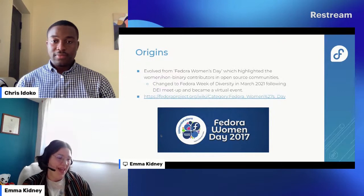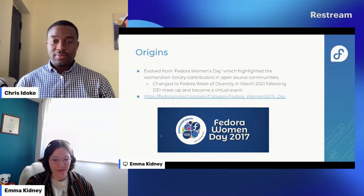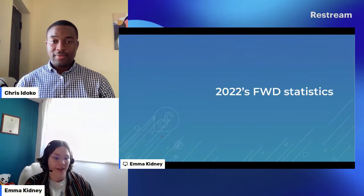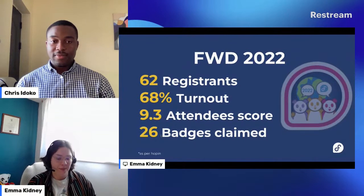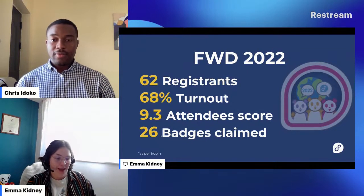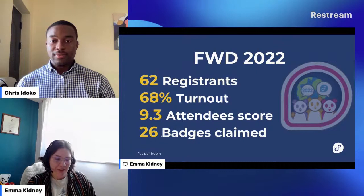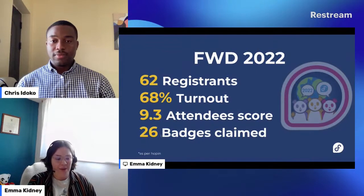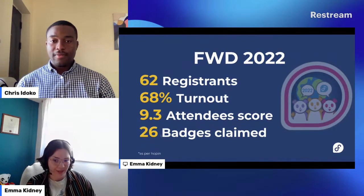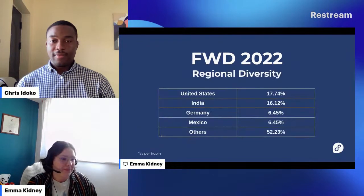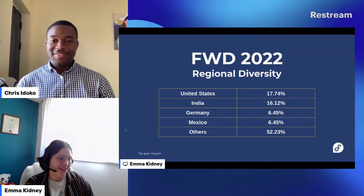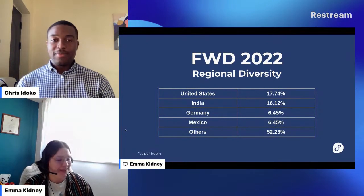There's a link to previous Fedora Women's Days — there were quite a few of them and it's interesting to look back on. Statistics from our last Week of Diversity in 2022: we didn't have one in 2023, but we'll come back to that. In 2022 it was on Hopin, so we were able to get statistics — 62 registrants, 68% turned up, a satisfaction score of 9.3 out of 10, and 26 badges claimed. There will also be a badge for this year's Week of Diversity. Regionally, the most represented areas were the United States and India.